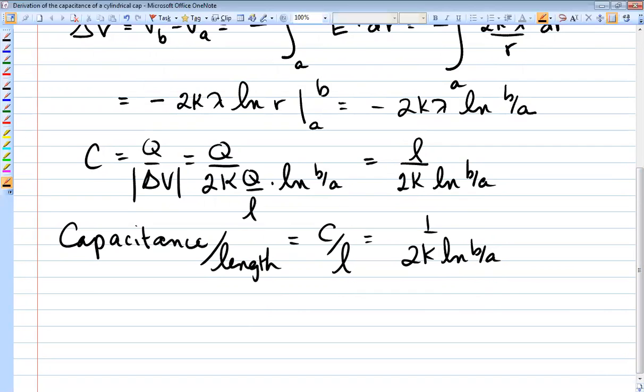So if you want a really big capacitance, you make B very close to A. So the ln of that is very close to 0, which makes this really huge because it's on the bottom. Okay, so that is the cylindrical one.